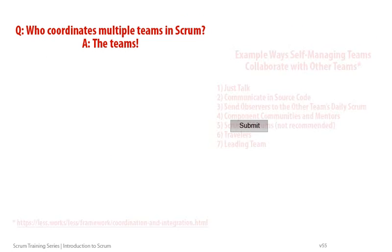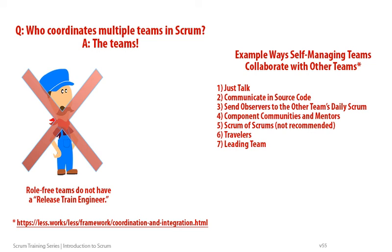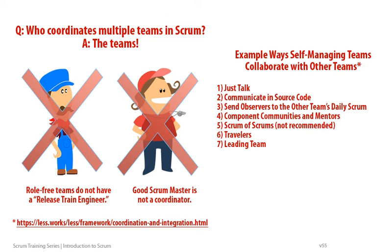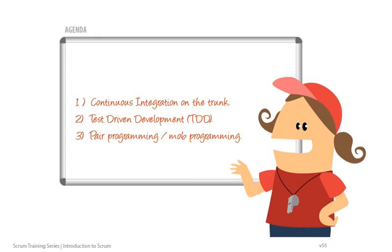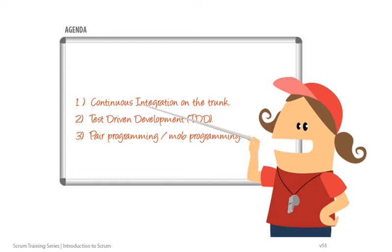All coordination responsibility belongs to self-organizing teams, so there's no release-train engineer or other management-designed coordination roles. The Scrum Master tries to enable self-managing teams, so a good Scrum Master would never do the actual coordination. The Scrum Master should help teams learn continuous integration on the trunk, test-driven development, and other modern development practices.